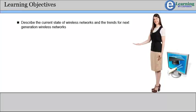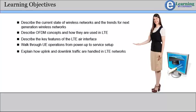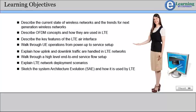After completing this course, you will be able to: describe the current state of wireless networks and the trends for next generation wireless networks; describe OFDM concepts and how they are used in LTE; describe the key features of the LTE Air Interface; walk through UE Operations from Power-up to Service Setup; explain how uplink and downlink traffic are handled in LTE networks and walk through a high-level end-to-end service flow setup; explain LTE network deployment scenarios; and sketch the system architecture evolution, or SAE, and how it is used by LTE.